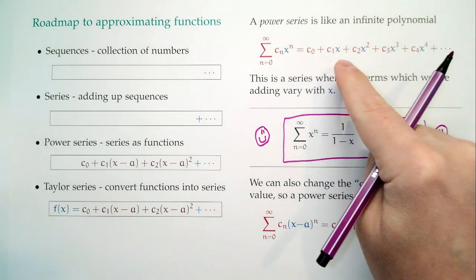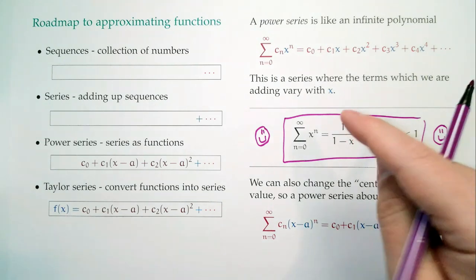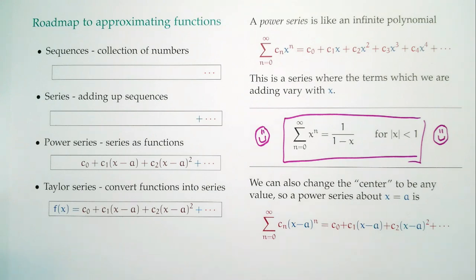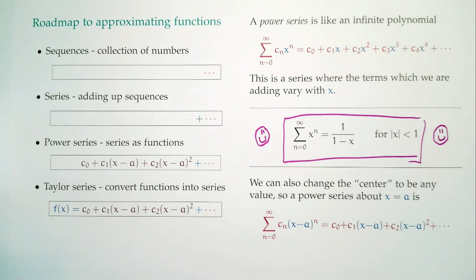Notice that right now this polynomial is all in terms of x. We can think of this as a polynomial where we're centered at zero, but we can really center around any place. So we can talk about being centered at x equals a. What that means is instead of having our expression as a polynomial with terms involving x, it will be a polynomial with terms involving x minus a. So c_0 plus c_1 times (x minus a) plus c_2 (x minus a) squared, and so forth. A power series is just a huge number of series that all fall into one general family.